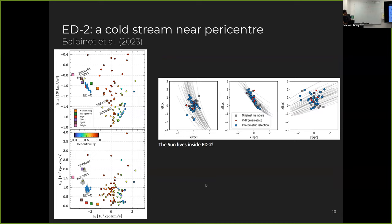So the first clump is called ED-2. So ED-2 is a cold stellar stream, so meaning that is a stellar stream that formed from the disruption of a globular cluster. And it's a cold stellar stream because the velocity dispersion of the stream is low. So it's roughly, it's less than 10 kilometers per second.